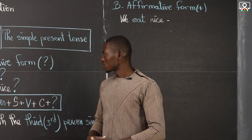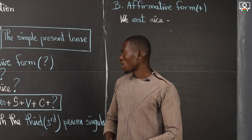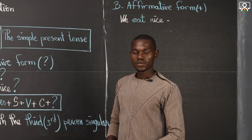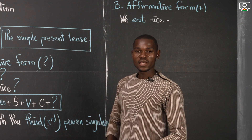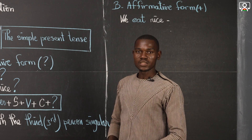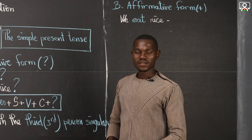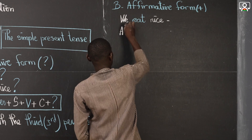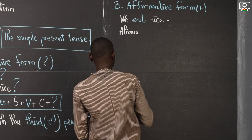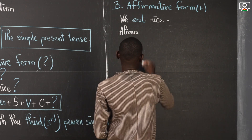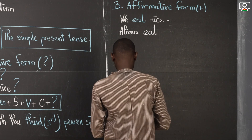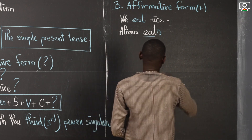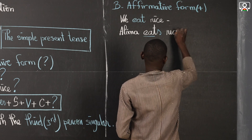The next sentence is: Does Alima eat rice? Answer: Yes, Alima eats rice. Let's write it: Alima eats rice.